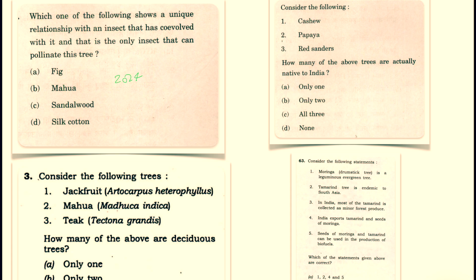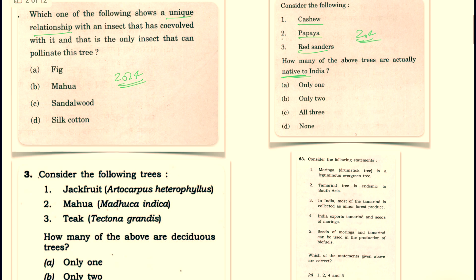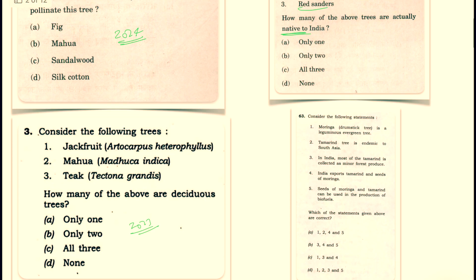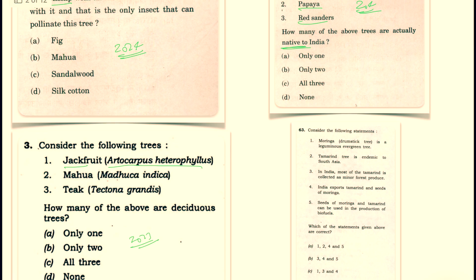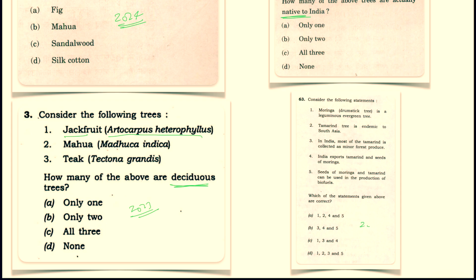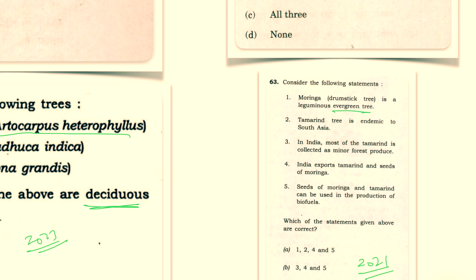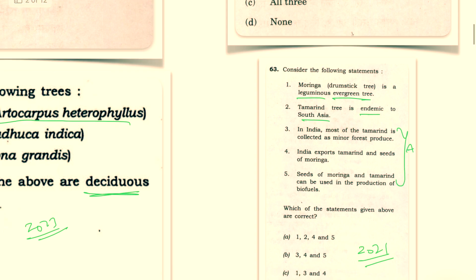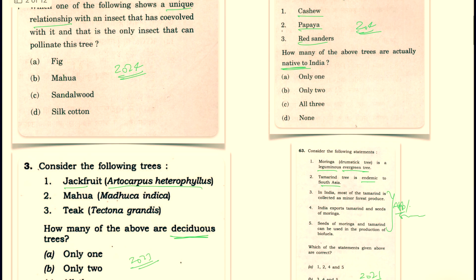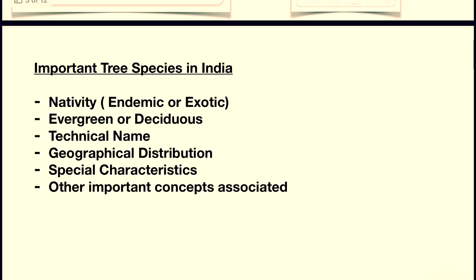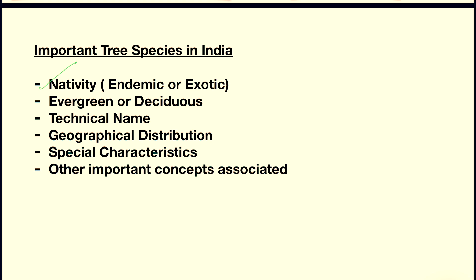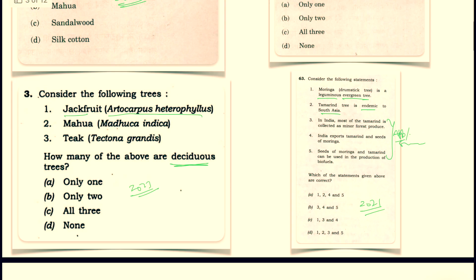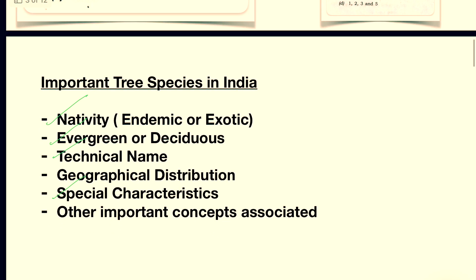For example, in the year 2024, we had a question on a unique property of a tree, and they also gave us some trees and asked which are native to India. Similarly, in 2023, they mentioned names of some trees along with their scientific names and asked which of them are deciduous trees. In 2021, they asked whether a tree is evergreen or deciduous, whether it is endemic, and its applications or special characteristics.